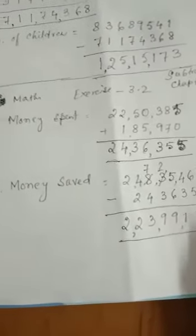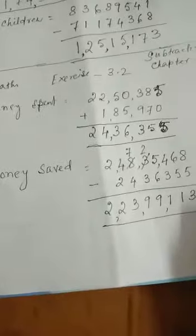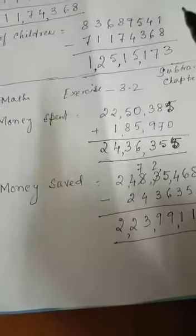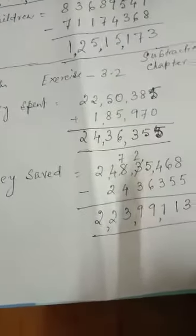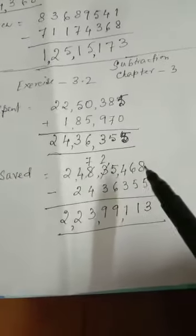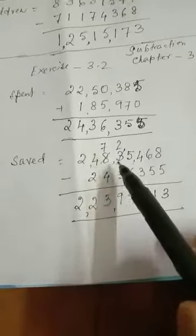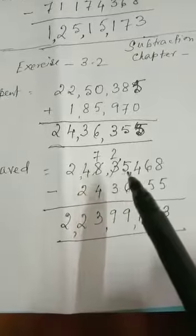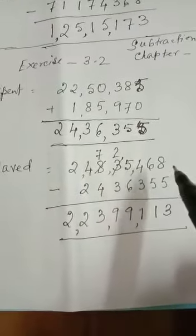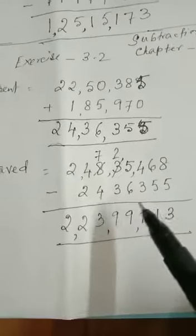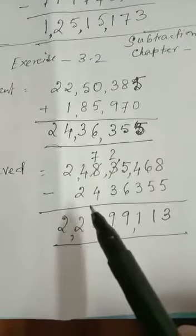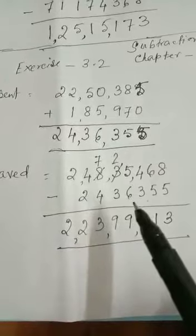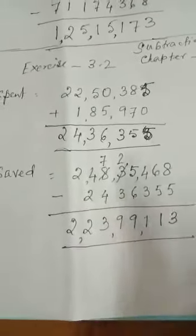Now, this amount you have to subtract from his bank account. So, write the number again here, that is, 2,48,35,468, minus 24,36,355. Subtract now.